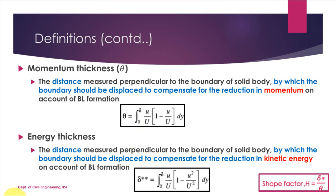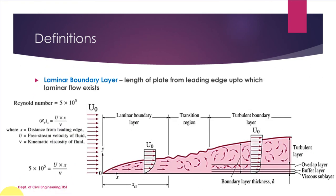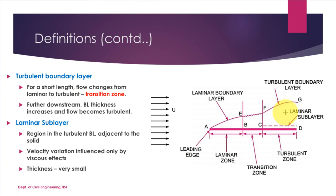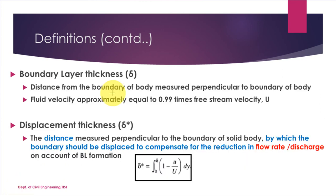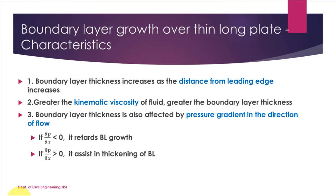We have now discussed the key terms related to the boundary layer formed over a thin plate: laminar boundary layer, turbulent boundary layer, laminar sub-layer, transition zone, boundary layer thickness, displacement thickness, momentum thickness, and energy thickness. Next we'll discuss characteristics of boundary layer growth over a long thin plate.